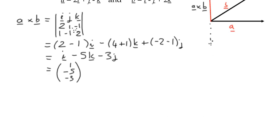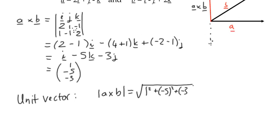So for the unit vector, we want to find, first of all, the magnitude of A cross B. So we can say it's the square root of 1 squared plus negative 5 squared plus negative 3 squared. So we're taking each of the elements of the column matrix A cross B and applying a bit of three-dimensional Pythagoras theorem, which gives us the square root of 35.